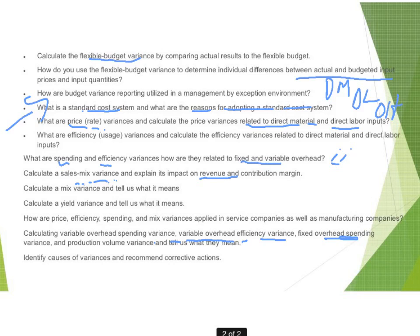Also develop causes for these variances and maybe recommendations. Have this in the back of your mind: what causes a direct material price variance? What causes a direct labor usage variance? And how are they connected? This section is very important — flexible budget analysis. Go over that a number of times and we'll do a couple of problems on that.